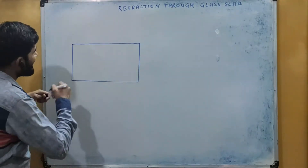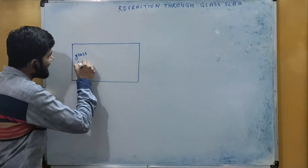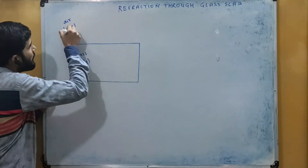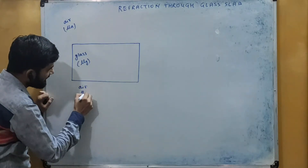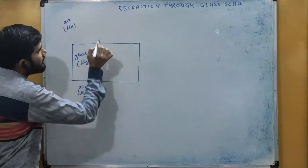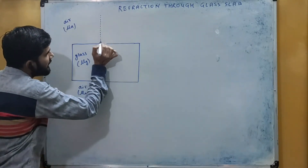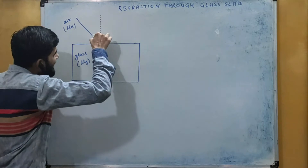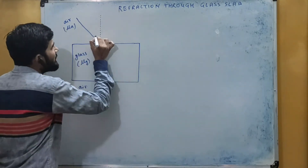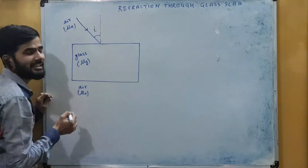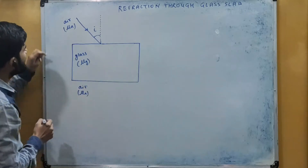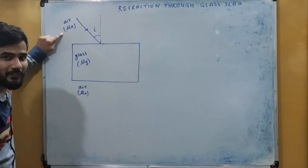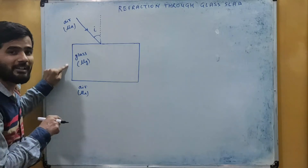First of all we will see that this is glass here and we will assume its refractive index to be mu g. This medium we have air and its refractive index is mu a. Here also again we have air, its refractive index is mu a. We will draw a normal line here because we have to draw the angle of incidence. We have an incident light ray such that it makes an angle of incidence i. This is the incident ray and this is the normal line. This medium is air and this is glass.